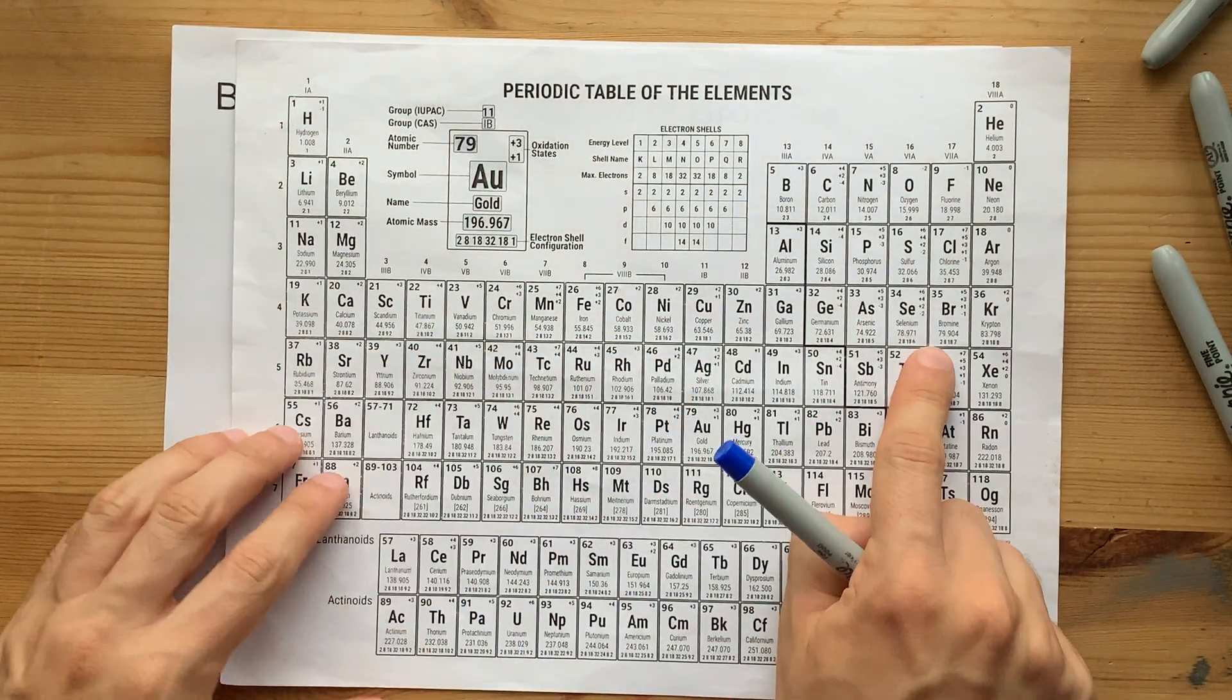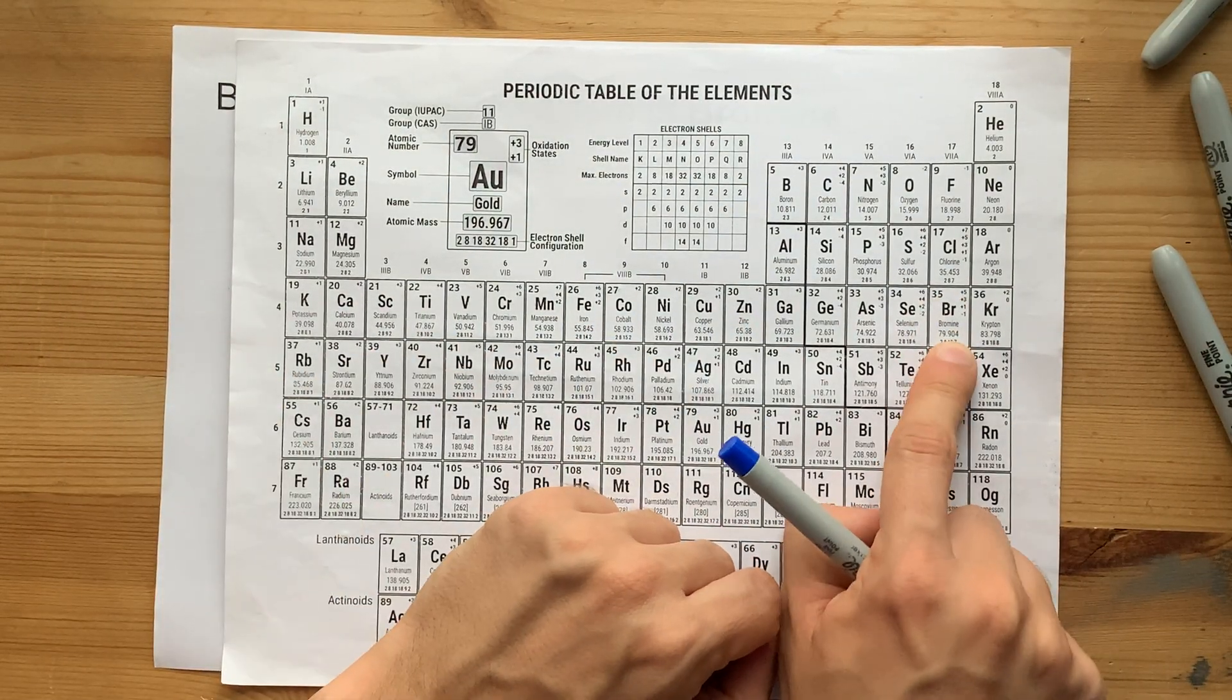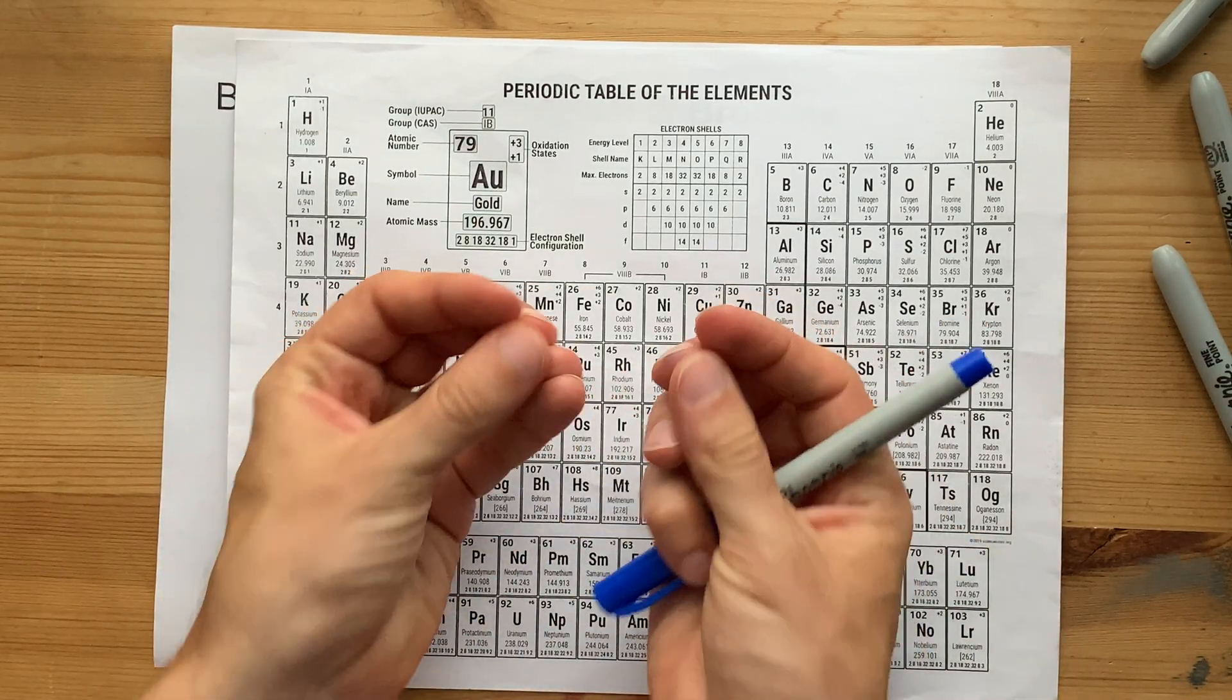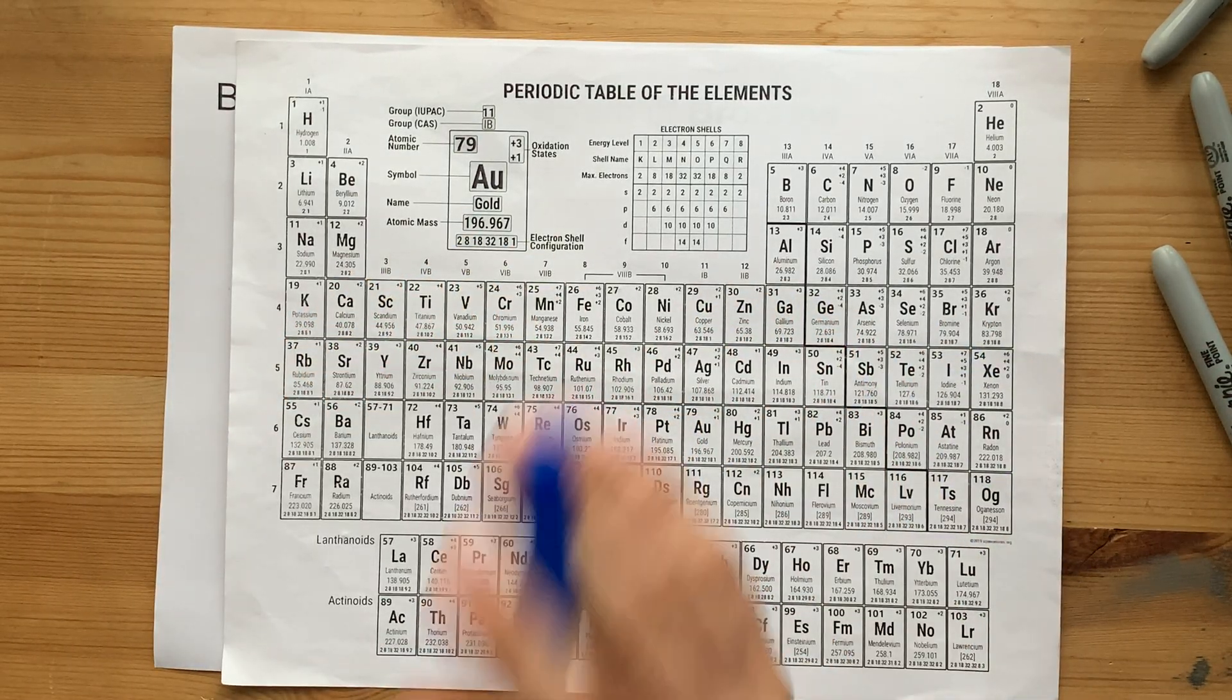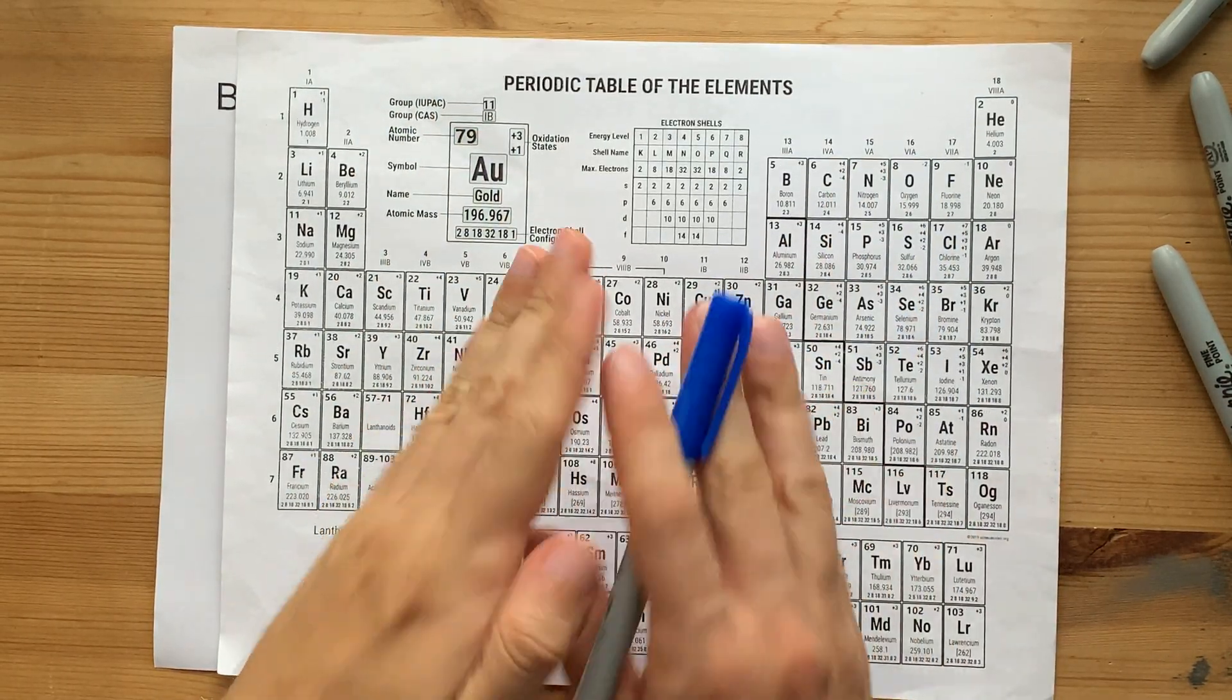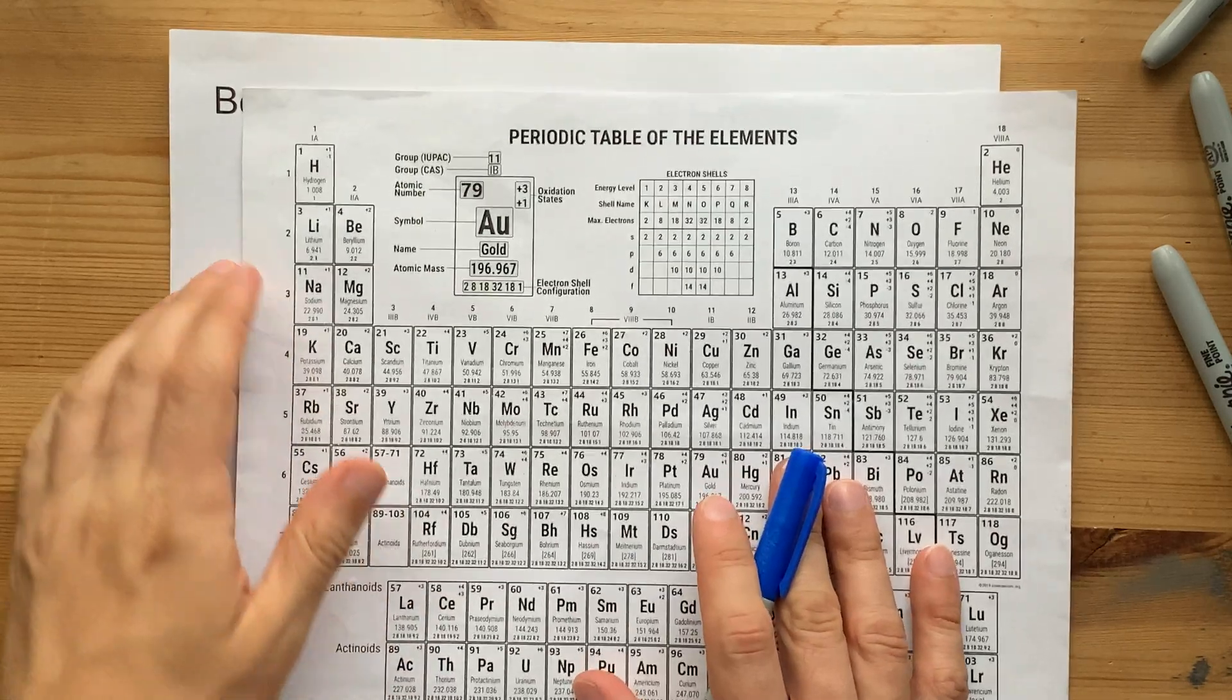But more importantly, bromine, according to the periodic table, has an average atomic mass of about 80. But there are no bromine atoms with a mass of 80. It's either 79 or 81. So you're going to get the number of neutrons wrong, no matter what.